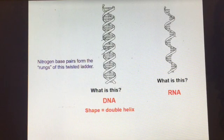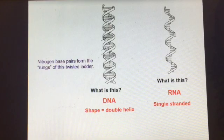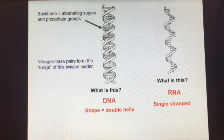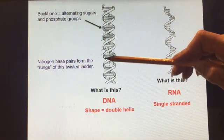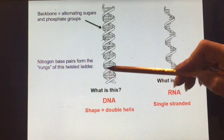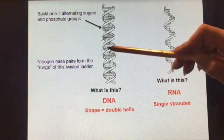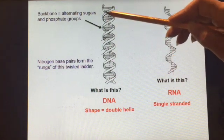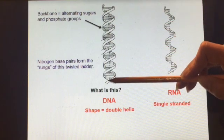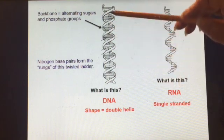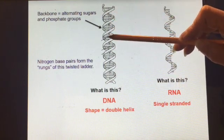The shape of DNA is called a double helix. RNA is single-stranded in comparison. The backbone of DNA — the outside portion — is the alternating sugar and phosphate that we refer to as the sugar-phosphate backbone. That's not the information part of DNA. The information part of DNA is the order of nitrogen bases in the middle.